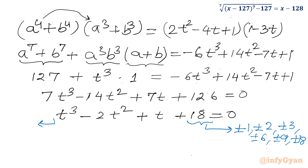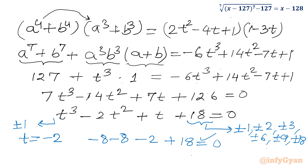The leading coefficient is 1, so we take the ratio of constant to leading coefficient. Let me put t equal to 1: 1 minus 2 plus 1 plus 18, which leaves 18, so it does not satisfy. Let me put t equal to minus 2: minus 8 minus 8 minus 2 plus 18 equals 0. Yes, that is true. So t equal to minus 2 is our base solution.